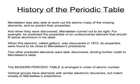Mendeleev was uncannily accurate about his predictions. For example, he predicted that there would be an element beneath aluminium in his table and predicted some of its properties. When it was discovered in 1875 it was called gallium, and its properties were found to be incredibly close to what Mendeleev had predicted. Other predicted elements were later discovered as well, and as this happened, other scientists paid more credence to Mendeleev's table, which was then accepted by the scientific community.